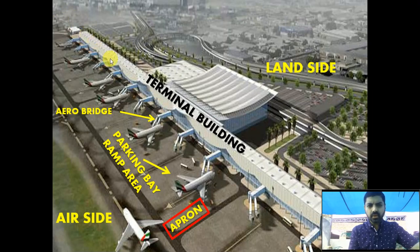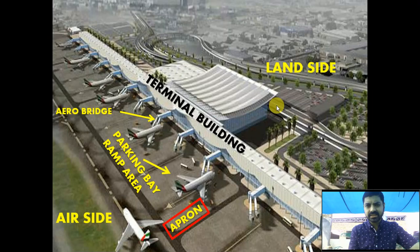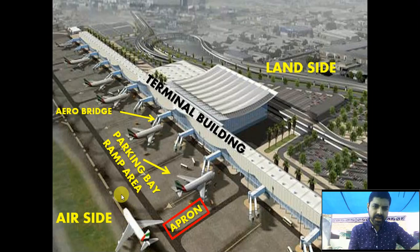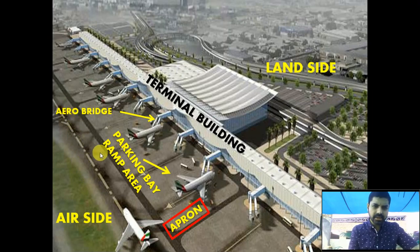To start with, this is an overview of how the airport looks. First, we will start with the land side. The land side of the airport is where passengers get dropped off from cabs, taxis, or their vehicles and then enter the airport. The other side — where aircraft parking, takeoff, landing, and various other operations take place — is called the air side.